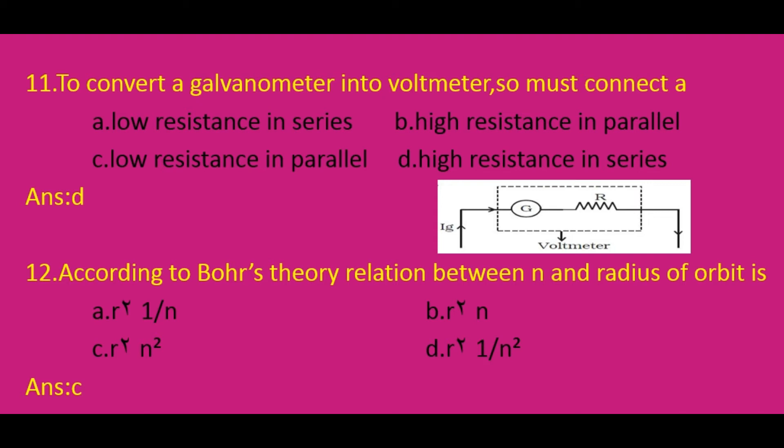According to Bohr's theory, the relation between n and the radius of the orbit: the radius of the orbit is proportional to n². The answer is C.